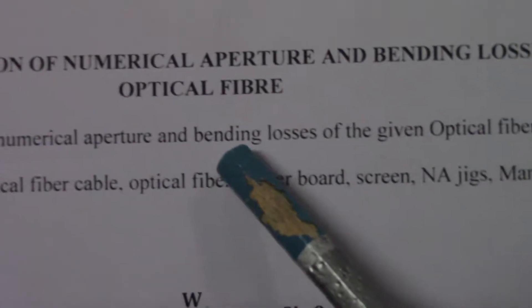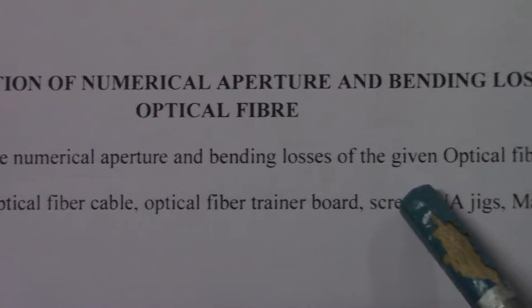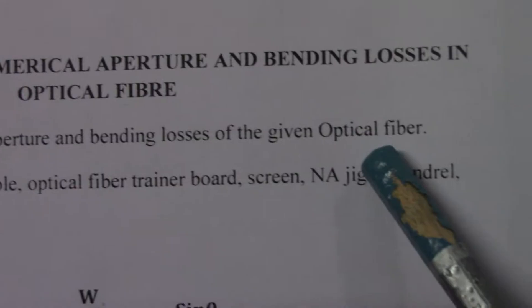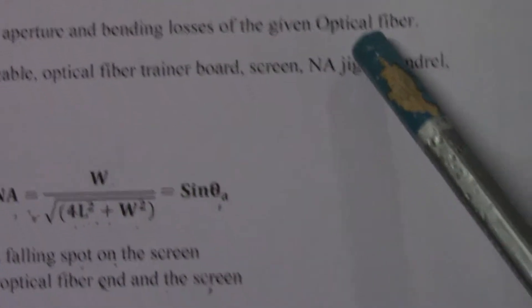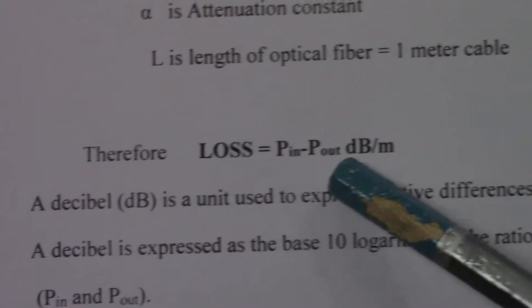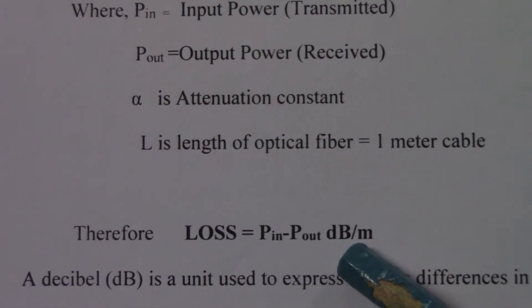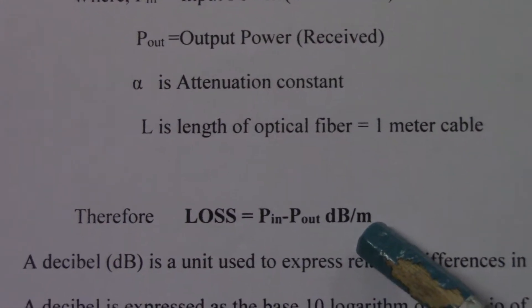Another part of this experiment is the determination of bending losses of the given optical fiber. To do this part, we use the formula: Loss equals P_in minus P_out, with units of decibels per meter.